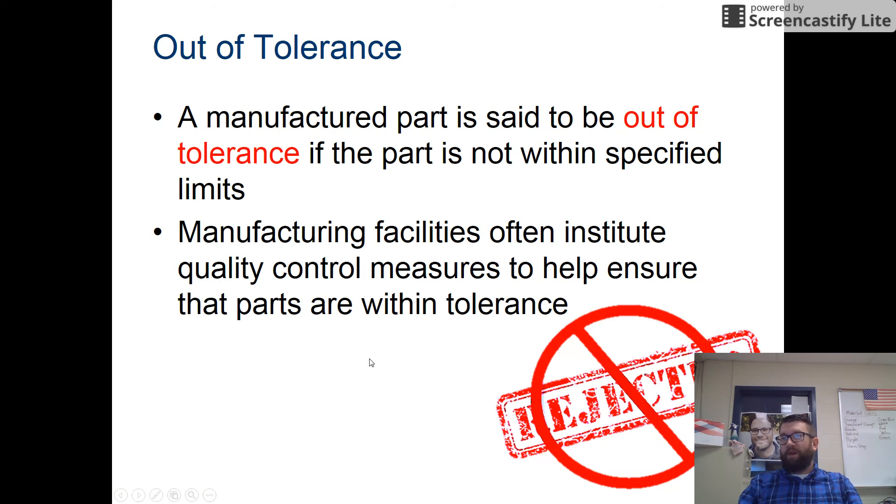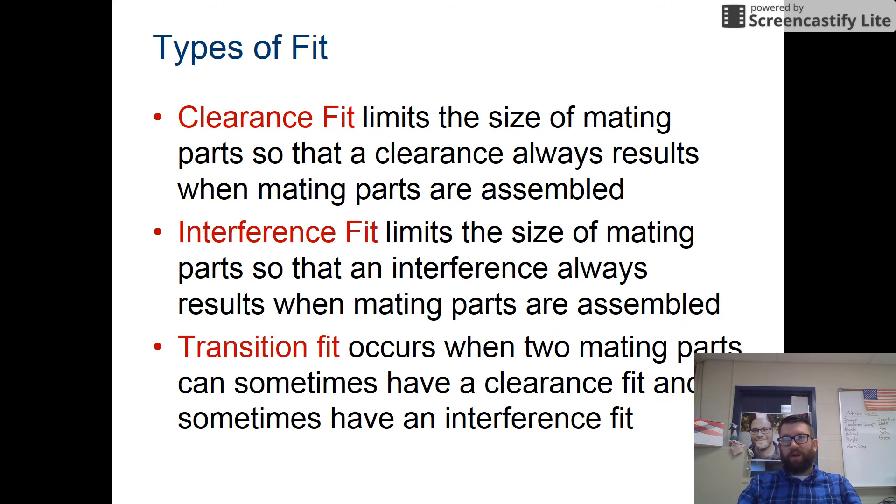The manufactured part is said to be out of tolerance if the part is not within the specified limits. This is where quality control comes in in a manufacturing situation. The goal is to have as few rejected parts as possible because that leads to cost overruns.